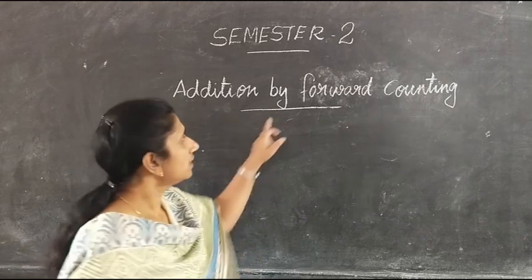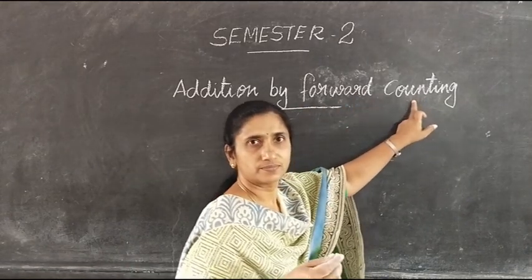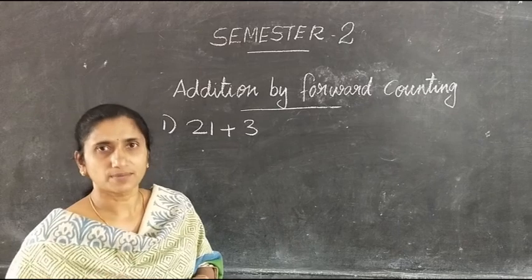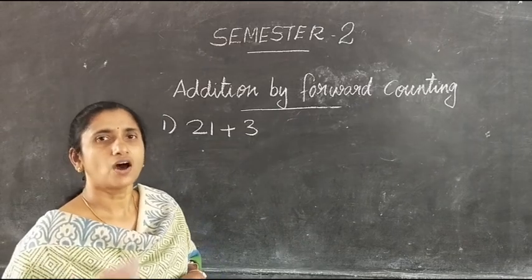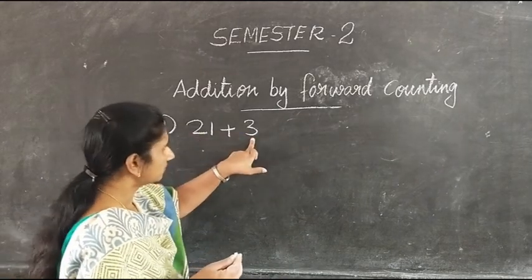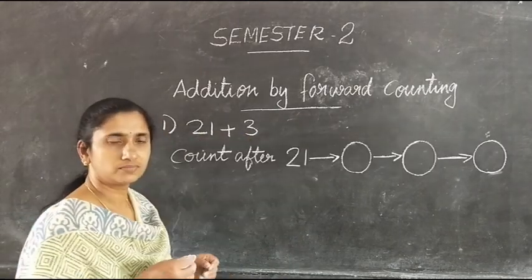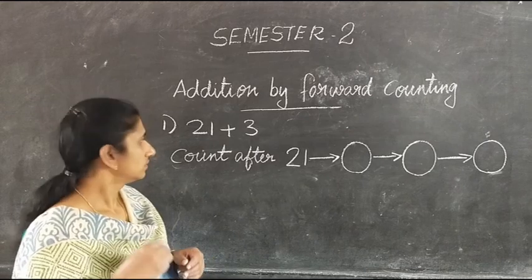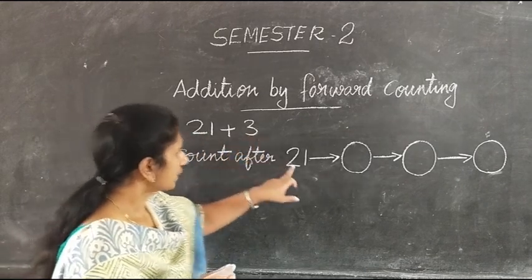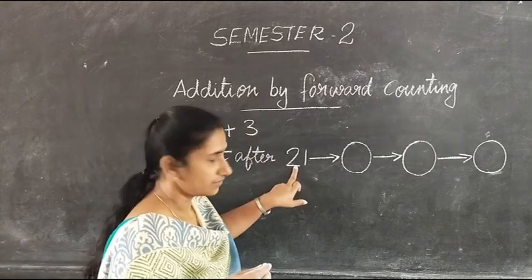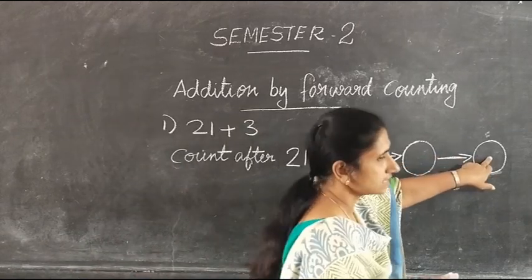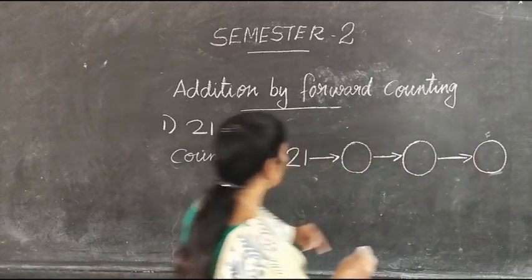Let us see how to add by forward counting. Now let us see some examples. Our first question is 21 plus 3. We have to add 21 and 3. First we have to write 21, then draw 3 circles like this.